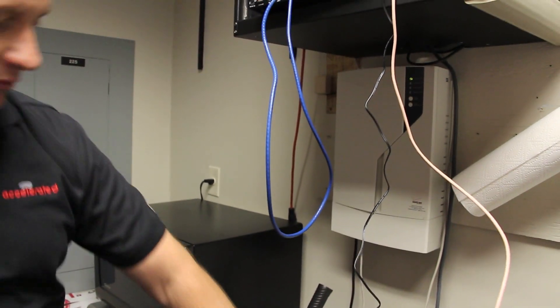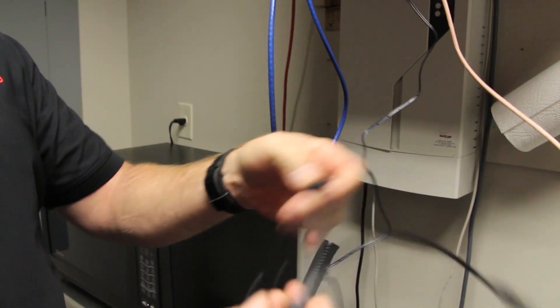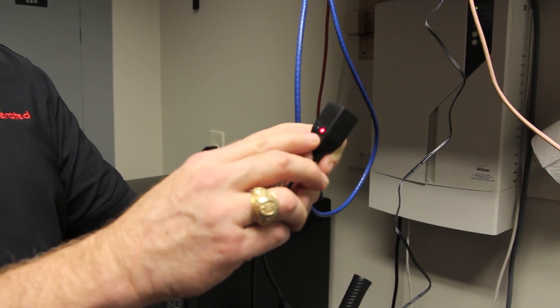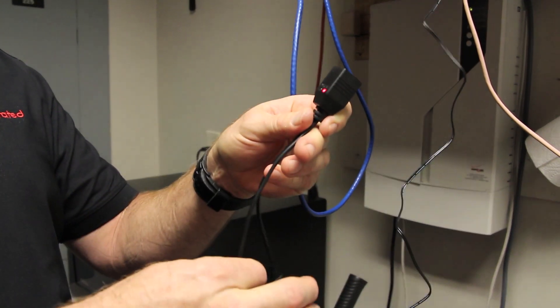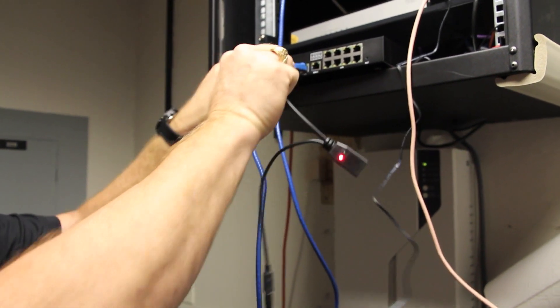We got the PoE injector. Step one is I plug the power supply into AC. I am going to plug that into that jack connector. And you will notice the red LED that says DC will be lit. It says hey, you do have power going here.